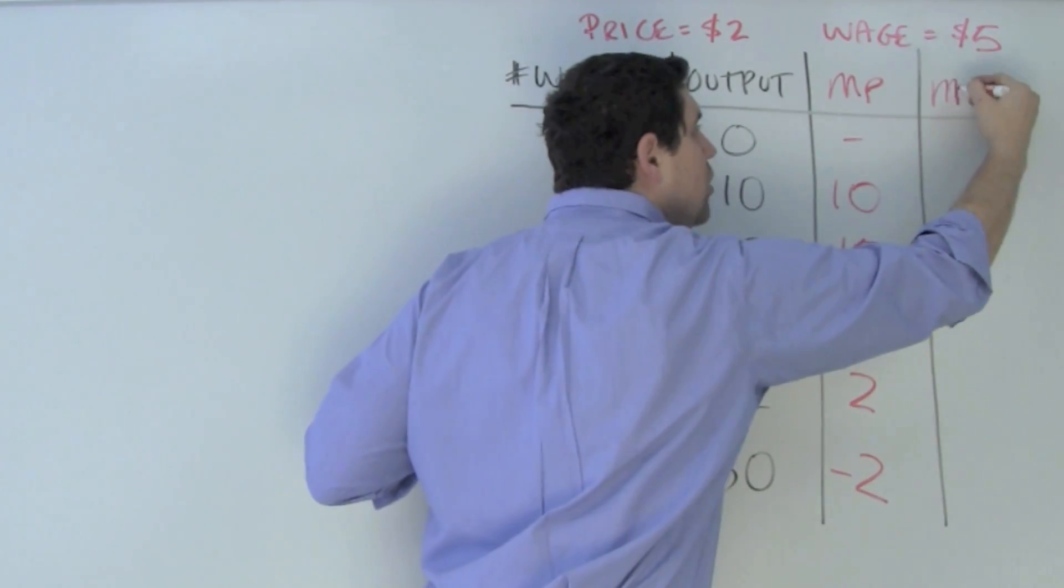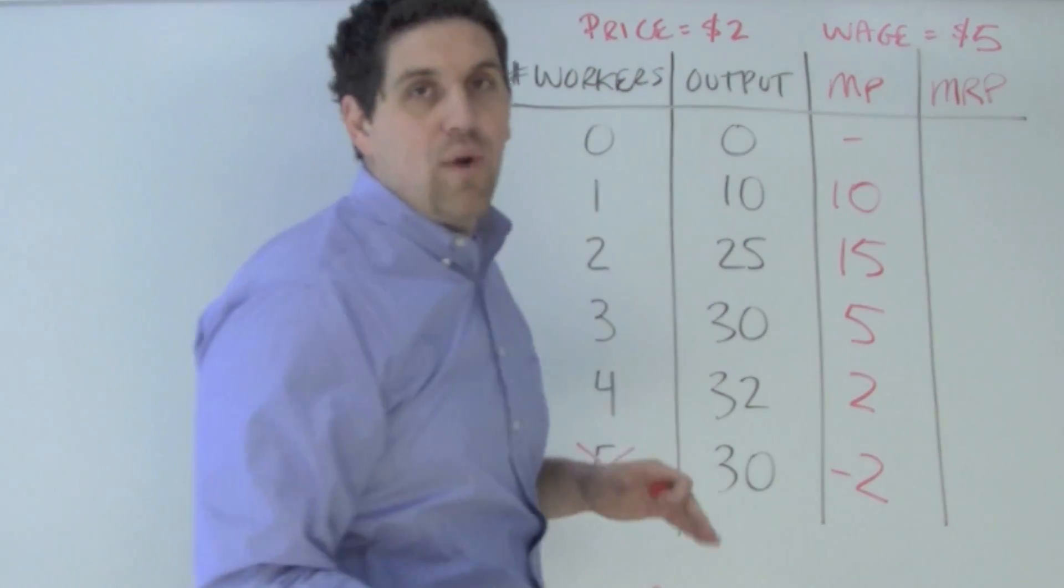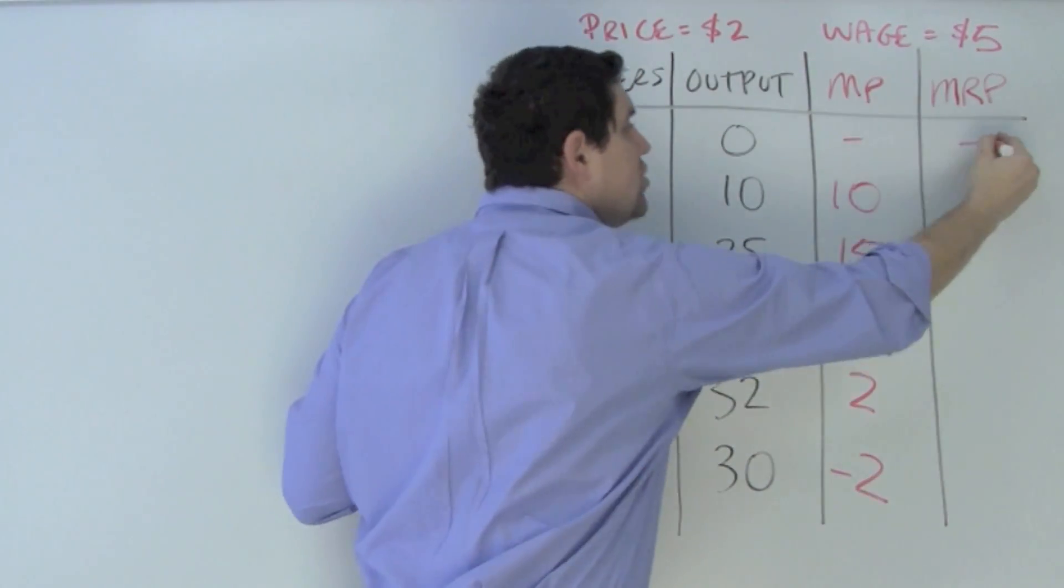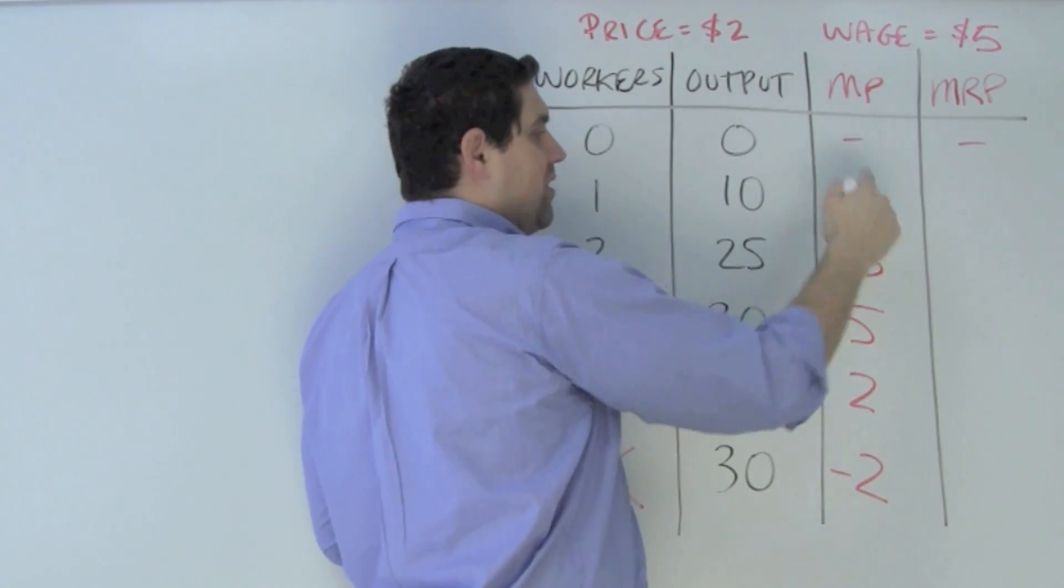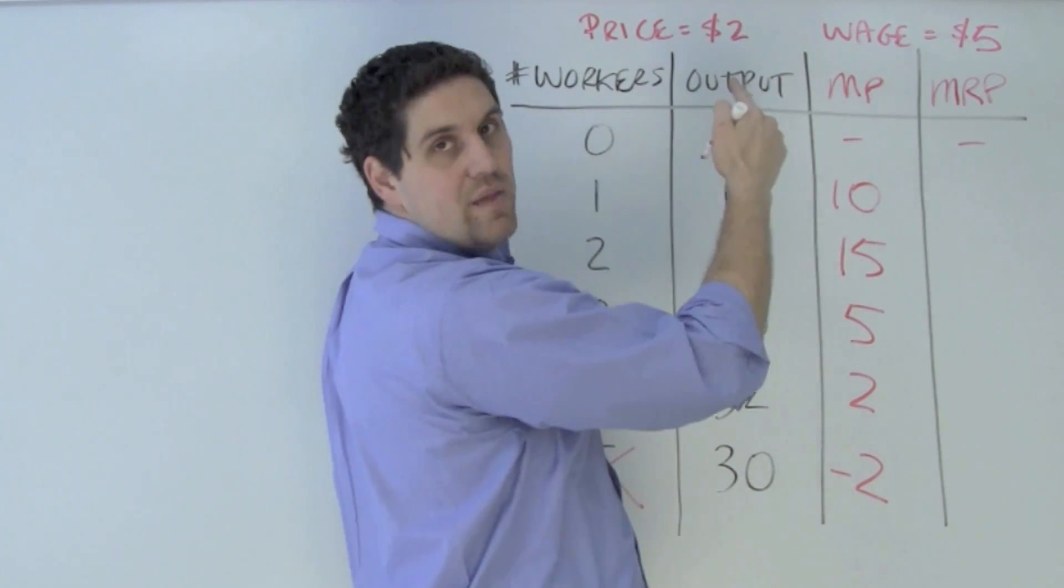That's what they call the marginal revenue product. Marginal revenue product is the additional revenue generated from each additional worker. It's the marginal product, the stuff, times the price you can sell that stuff.